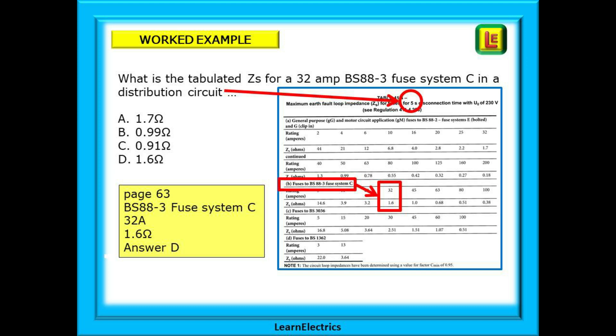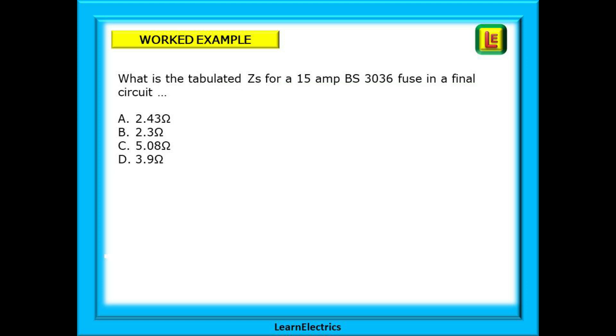The question tells us it is a distribution system which means a five second disconnection time. Find BS88-3 system C fuses but be careful there are two different types of BS88 fuses on this chart. Only one is correct for this question. Find 32 amps and the answer is 1.6 ohms answer D.